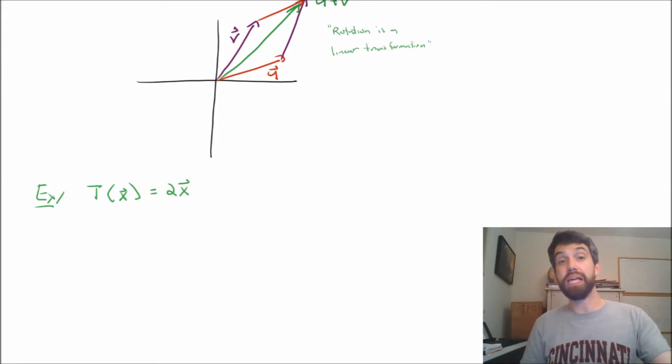Let's check, by the way, that this plays nicely with our two different conditions. Namely, if I therefore take T of cx, well, what this tells me is it goes to 2 times cx.